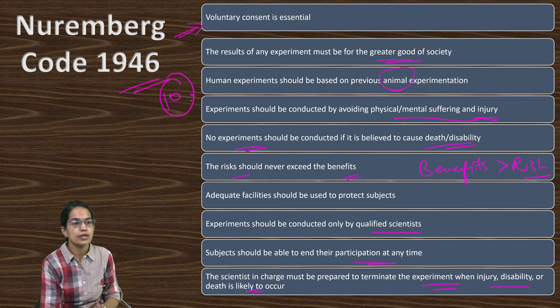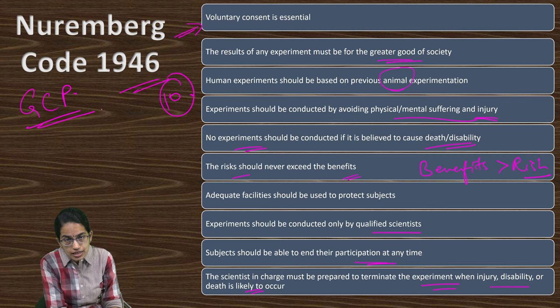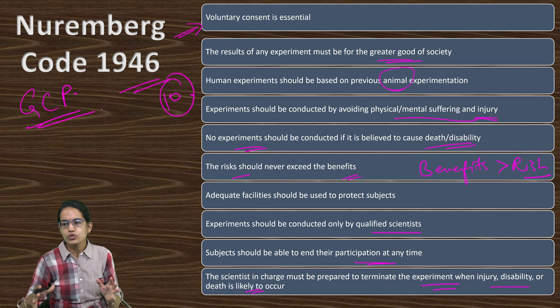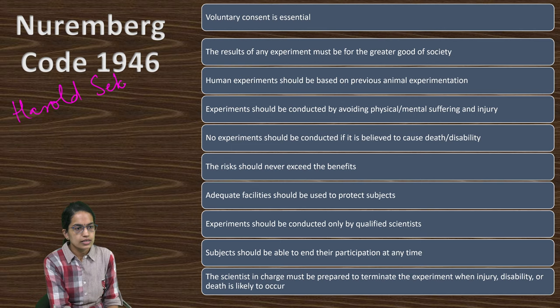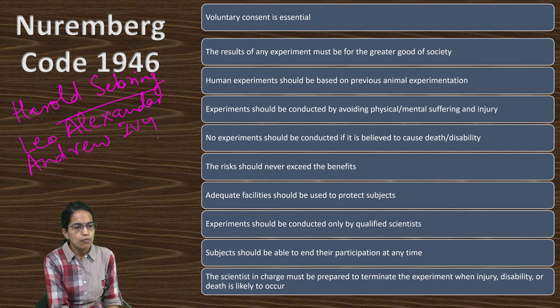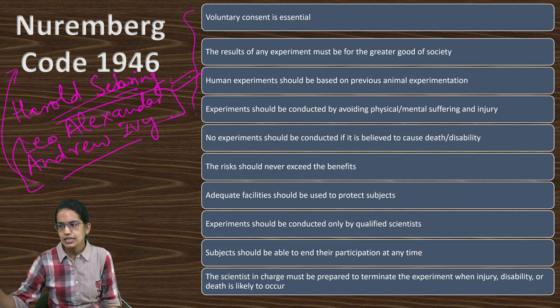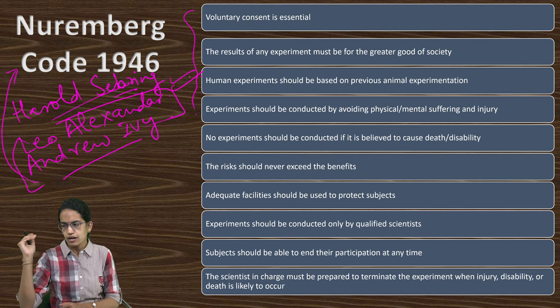The Nuremberg Code was the foundation for GCP — Good Clinical Practice — which is an attribute of excellence in research, covering better design, implementation, and analysis. Harold Serbing is the one who authored this code, and two major American physician doctors also played important roles: Leo Alexander and Andrew Ivey. The Nuremberg Code is now considered the basic guidelines throughout the world, including forming the basis of the Declaration of Helsinki, the Belmont Report, and the Common Rule.